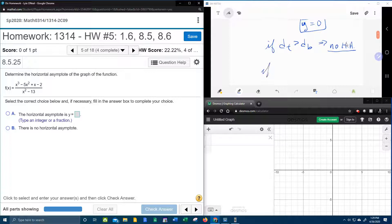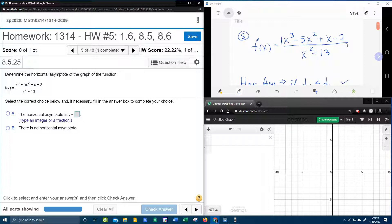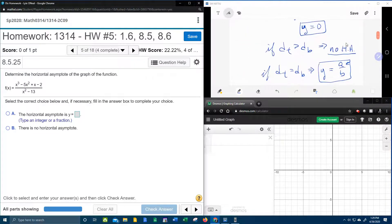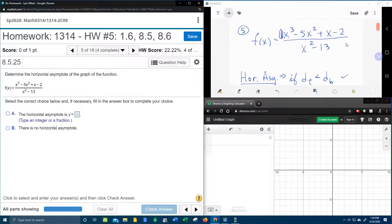And last but not least, if the degree of the top equals the degree of the bottom, that implies that your horizontal asymptote will be y equals a over b, where a is the lead coefficient of the top, which in this case would be 1, and b is the lead coefficient of the bottom, which in this case would also be 1. The lead coefficient is the number in front of the letter with the biggest power.